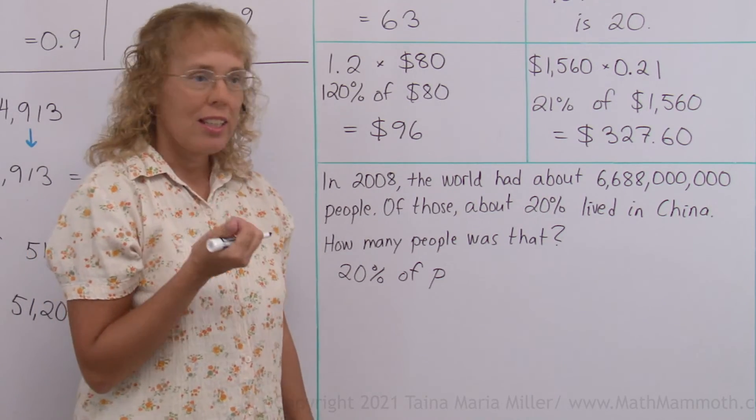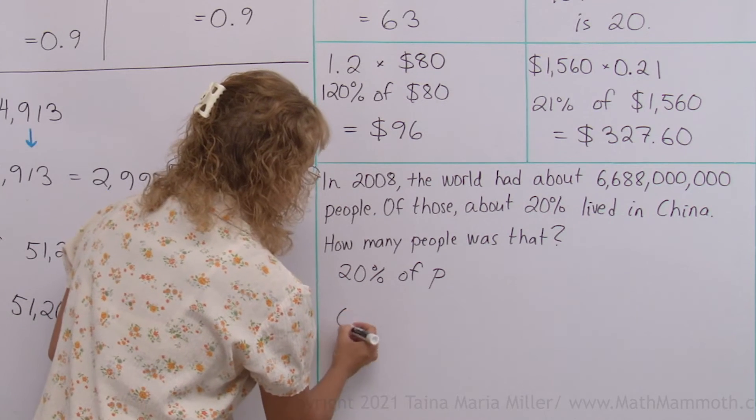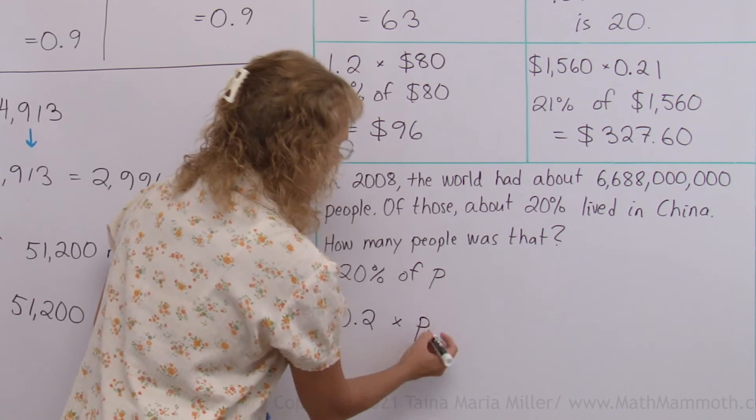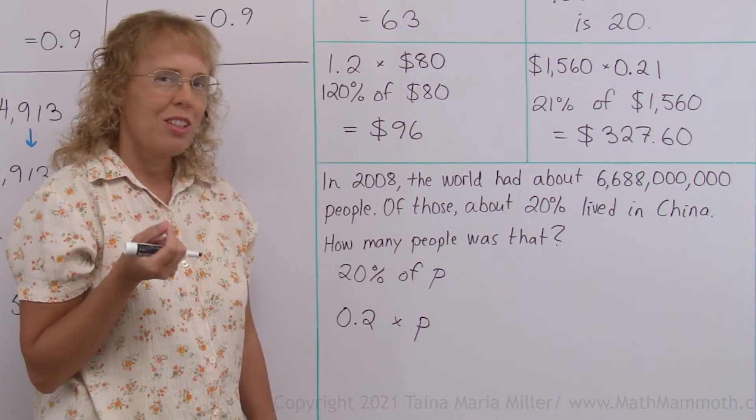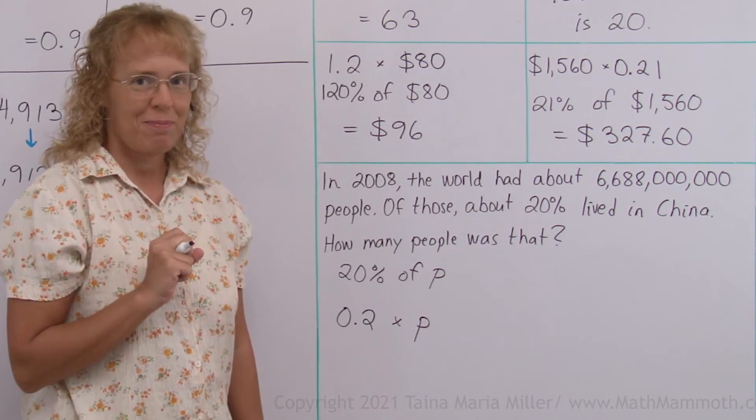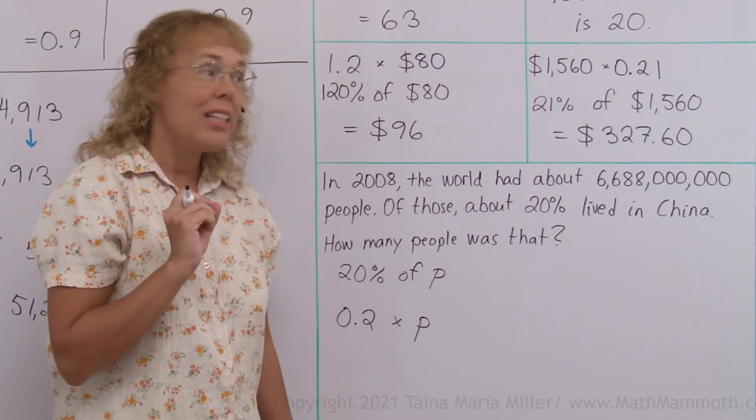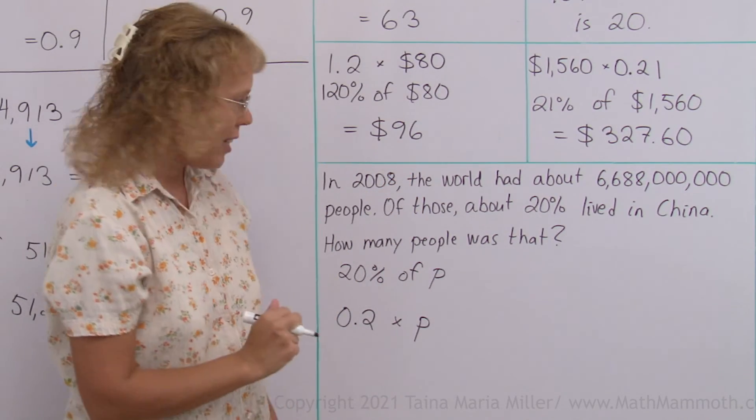Now one way as we've been talking in this lesson is to change this into a decimal 0.2. And this is times and then comes our number and then we can use to calculate. Can you think of two other ways?